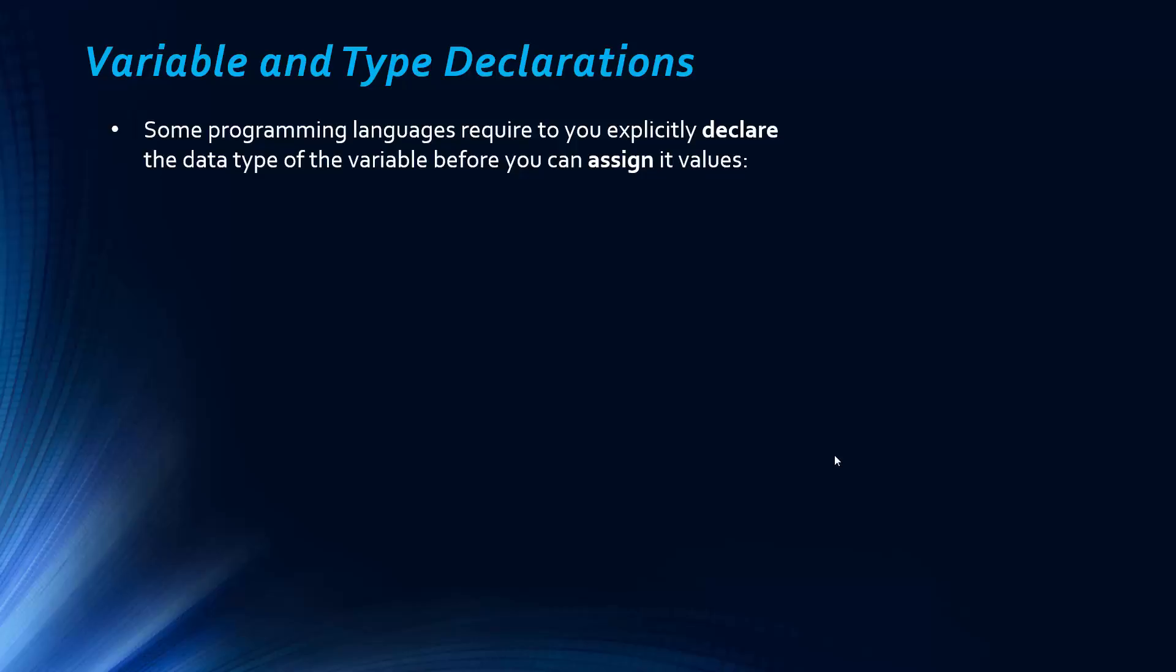So some programming languages require you to explicitly declare the data type of a variable before you can assign it a value. I mentioned in the last video that the data type of variables usually remains fixed during execution. And you often have to, before you assign it a value, declare the data type. So some languages don't require this.